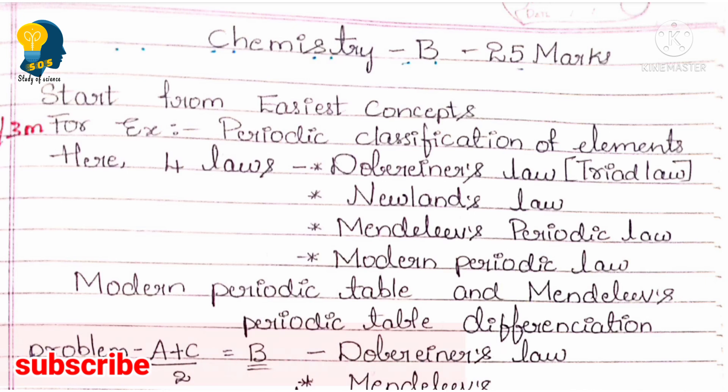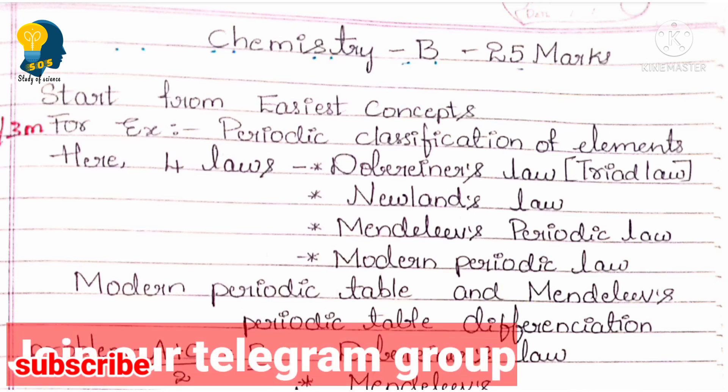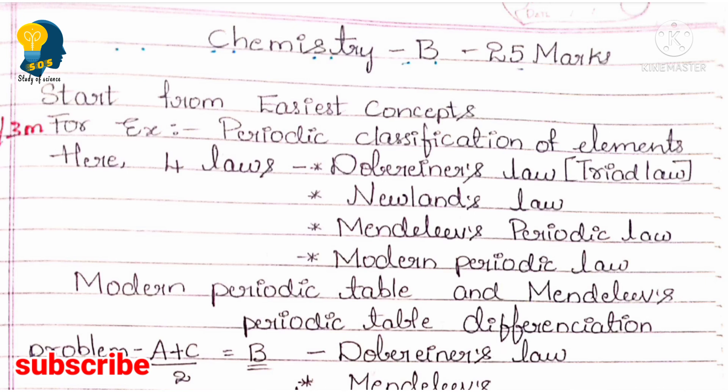Next, you need to study the differentiation between the Modern Periodic Table and the Mendeleev Periodic Table. They don't ask you to write the differences as a list, but they may ask how the Modern Periodic Table is different from Mendeleev's Periodic Table. Knowing the key aspects of that difference will help you easily answer in the examination.